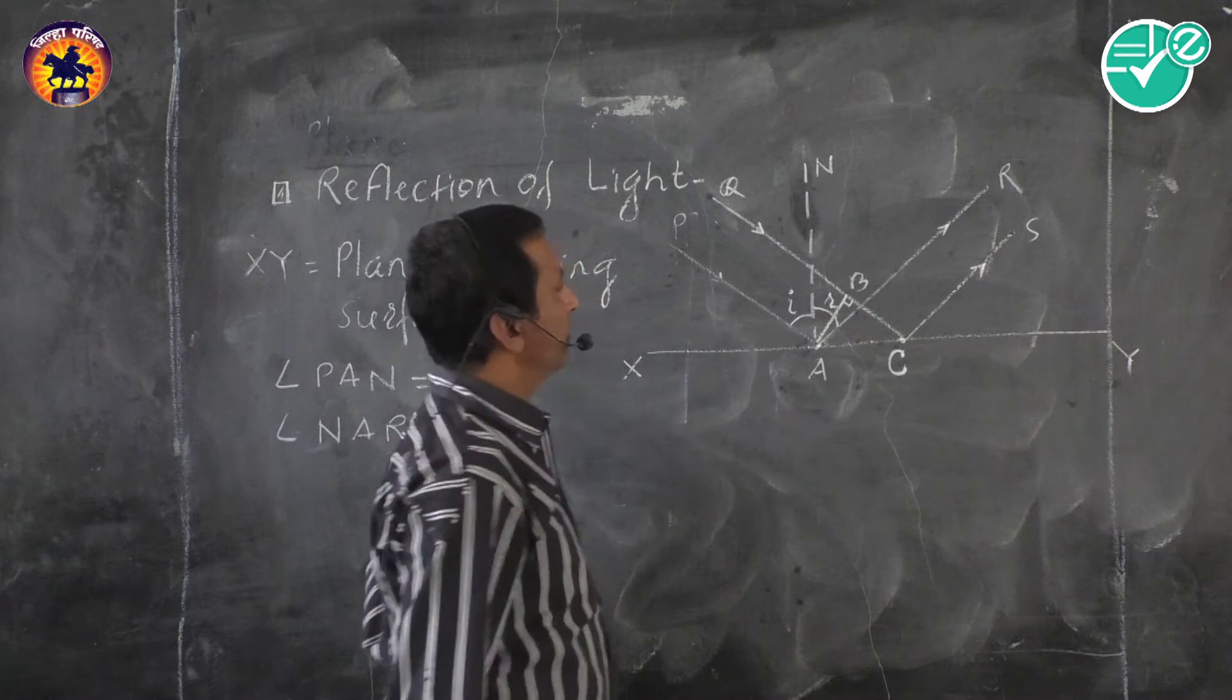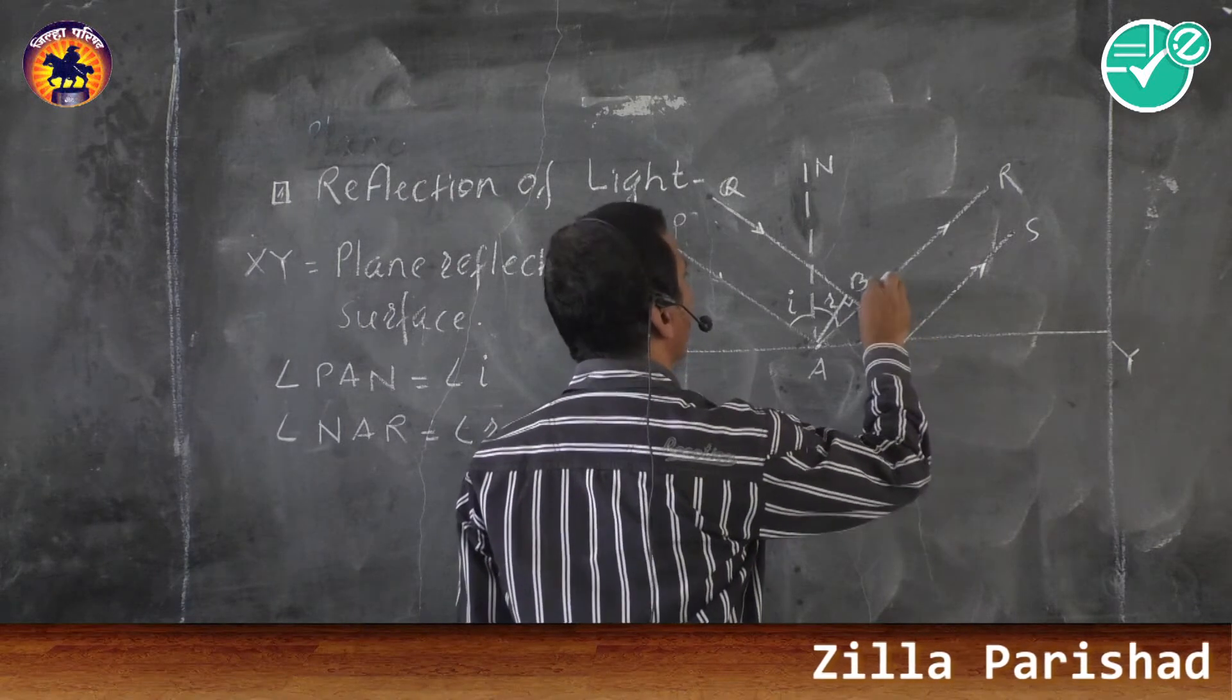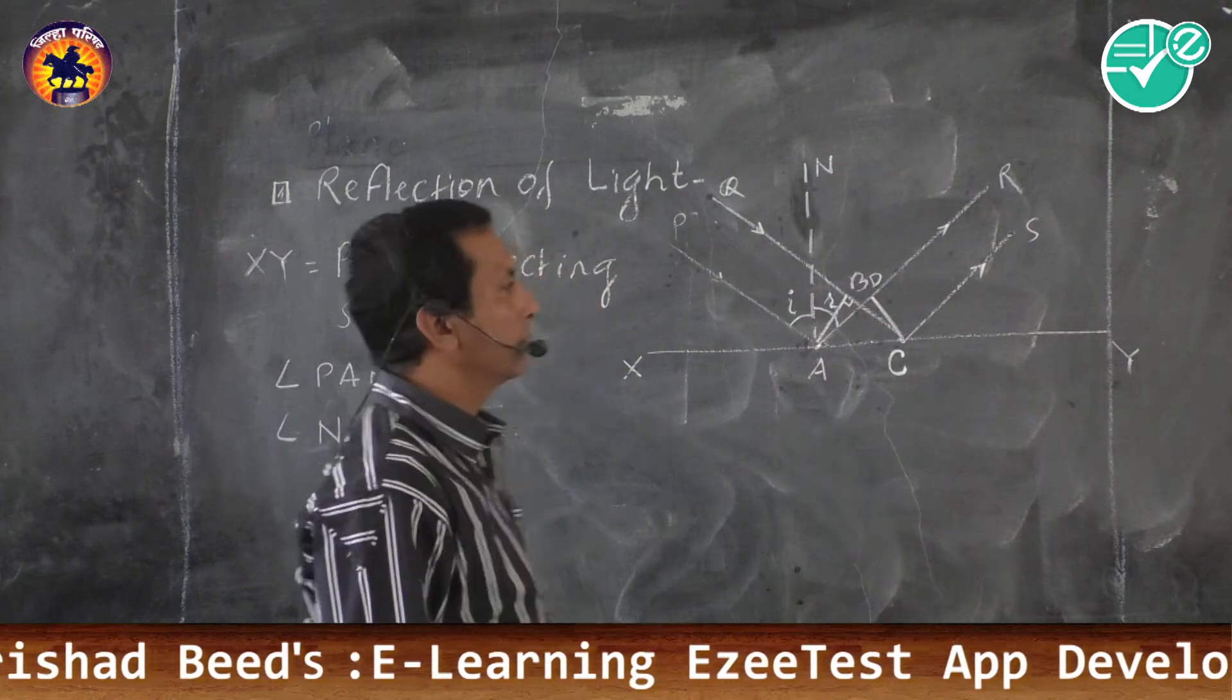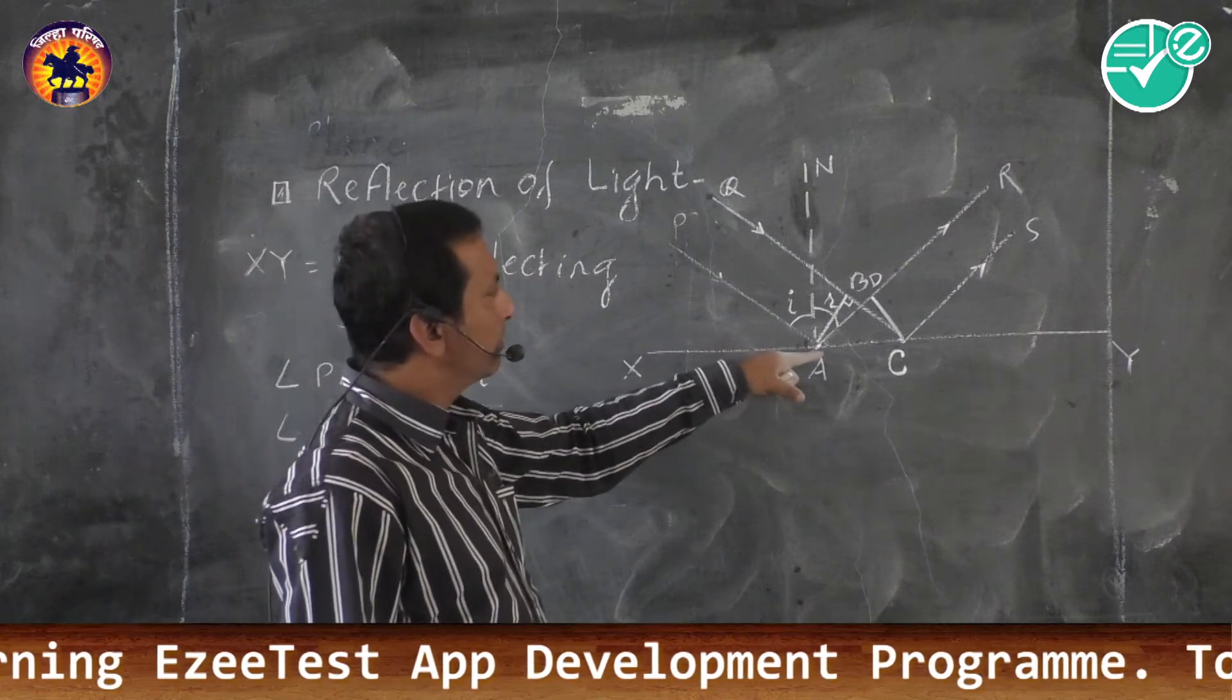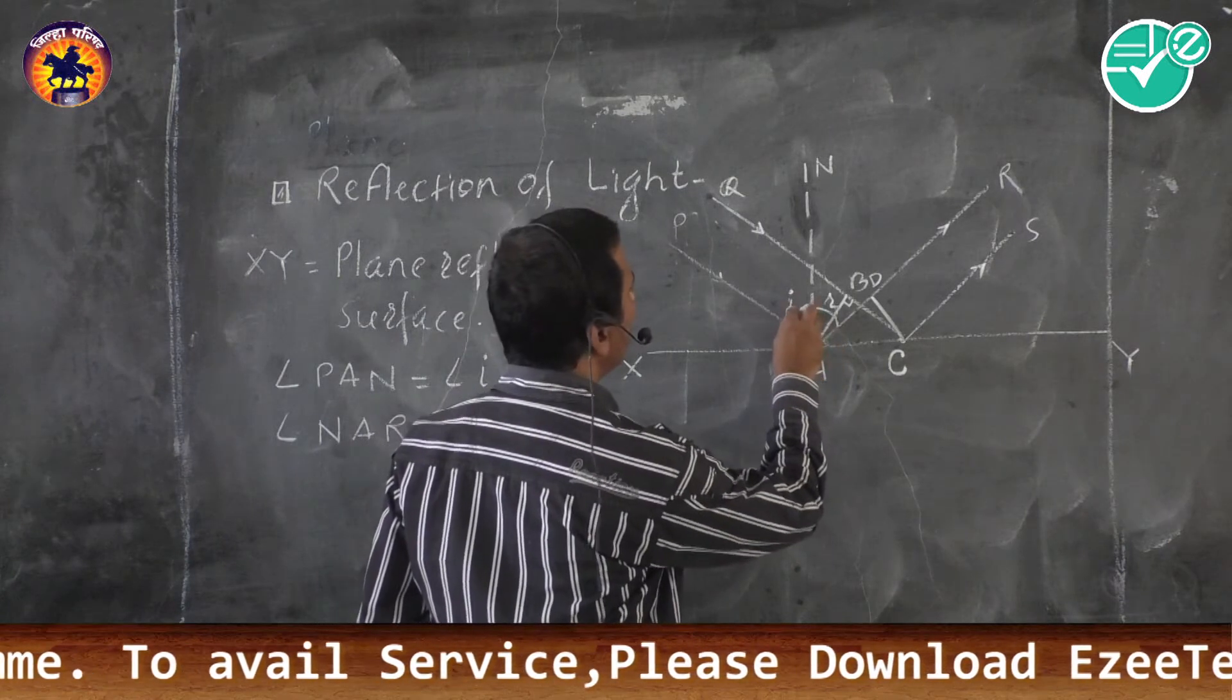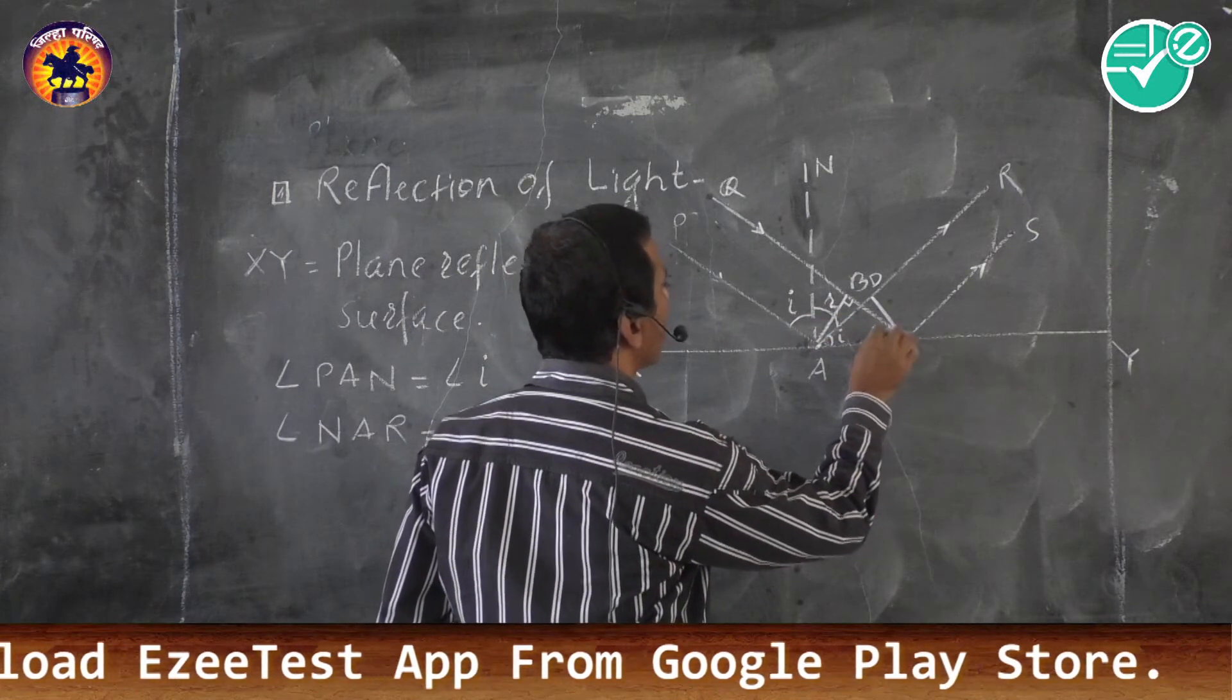And similarly draw a perpendicular at point D on reflected ray AR. Then see at the diagram, we have R according to 9th or 8th standard or 10th standard knowledge. If this angle is I, then this angle is also I. And if this is R, then this angle is also R.